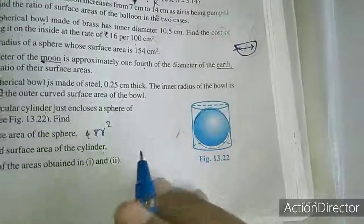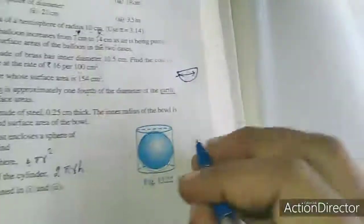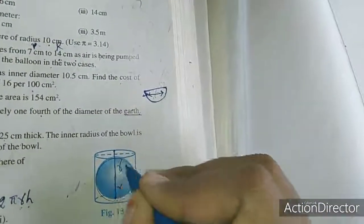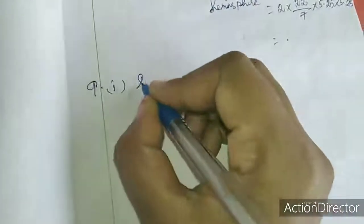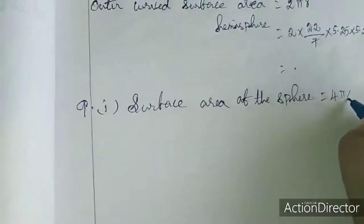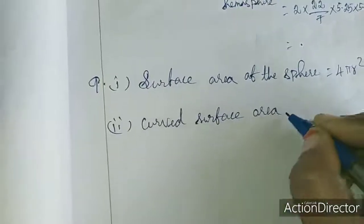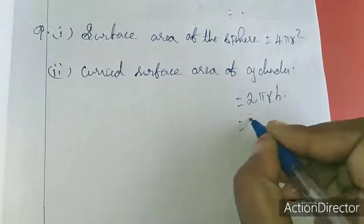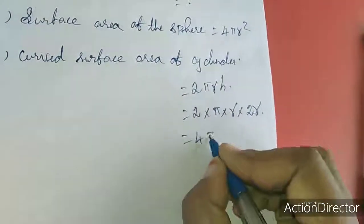Next, the curved surface area of the cylinder is 2πrh. Here, r = r and h = 2r, so curved surface area of cylinder = 2 × π × r × 2r = 4πr².